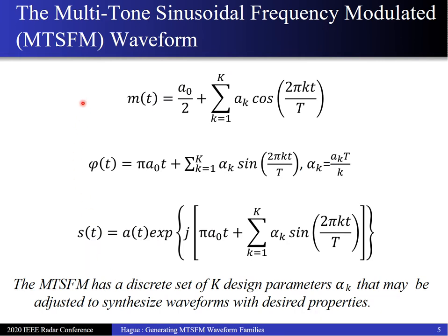Here is the multitone SFM model. Simply stated, its modulation function is expressed as a finite Fourier series with Fourier coefficients a sub k, using cosines. Integrating and multiplying by 2 pi gives the instantaneous phase: a carrier term plus a weighted superposition of sine functions weighted by modulation indices, which are a function of those Fourier coefficients. These modulation indices are the discrete set of parameters we'll use to modify the waveform's characteristics. Taking e to the j of this expression gives the waveform time series.